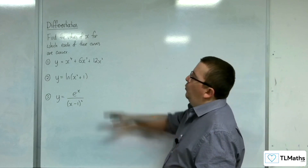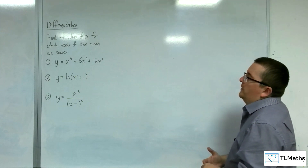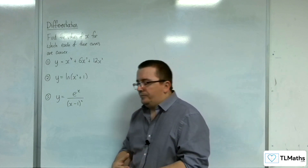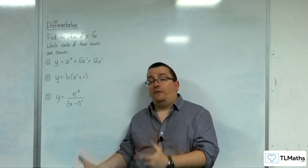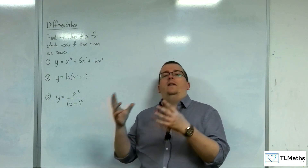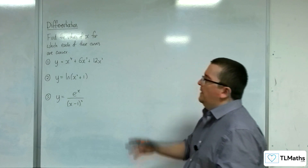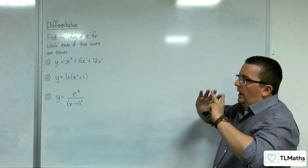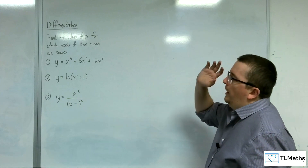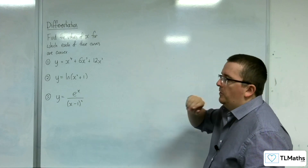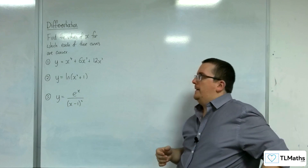We've got y equals x to the 4 plus 6x cubed plus 12x squared to start off with. We understand that a curve is convex when the second derivative is positive. Number one we should all be able to do. Number two and number three use differentiation skills we haven't met yet.